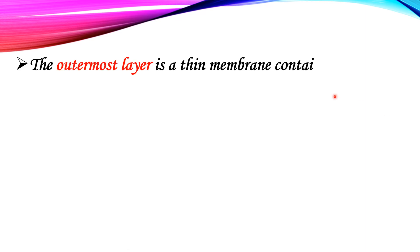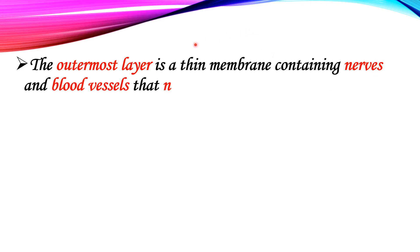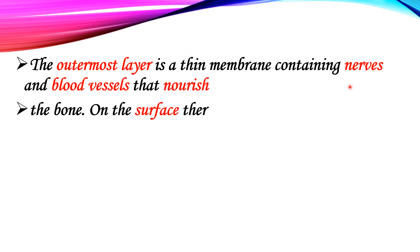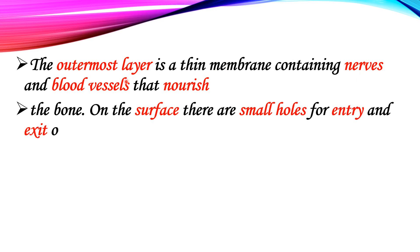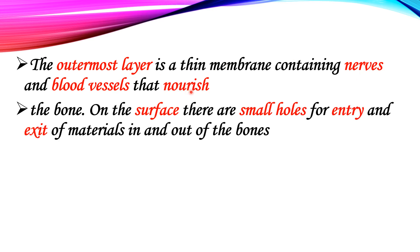Another point to consider is the outermost layer, which is a thin membrane containing nervous and blood vessels that nourish the bone. On the surface there are small holes for entry and exit of materials in and out of the bones.